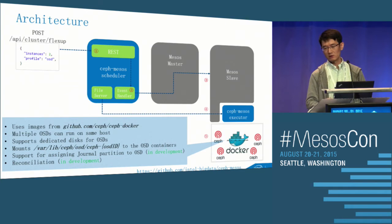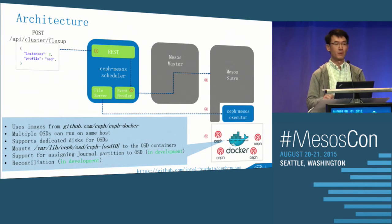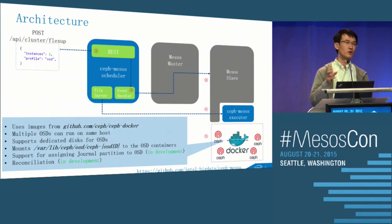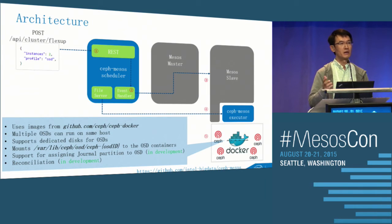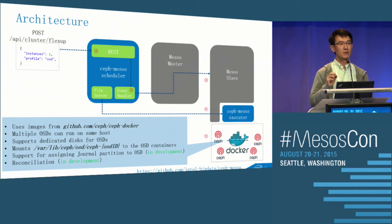We also allow users to specify which disks they want to use for their OSDs. In a typical Ceph cluster — or a typical Mesos cluster — the slave node will have one or more physical disks, and the admin may determine which of those physical disks should be used by the Ceph cluster.